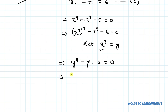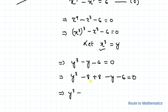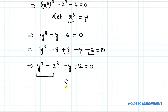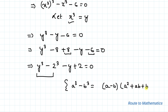In the next step, we subtract and add 8: y cubed minus 8 minus y minus 6 plus 8 equals 0. This gives us y cubed minus 8, where 8 can be written as 2 cubed, minus of y plus 2 equals 0. I am going to apply the algebraic identity a cubed minus b cubed, which equals (a minus b)(a² + ab + b²).